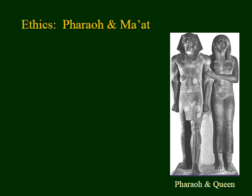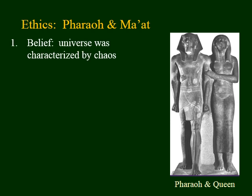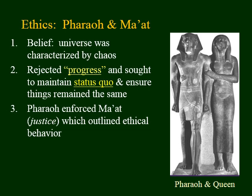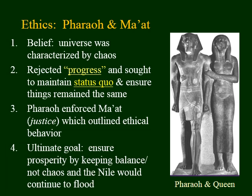A code of ethical behavior was provided by a concept called ma'at. Egyptians believed that the universe was characterized by chaos, and they wanted to ensure that this chaos did not rain down on the earth. In order to do this, they wanted to maintain the status quo — to make sure things always stayed the same. Today we have a belief in progress, but it was Pharaoh's job to maintain the status quo, ensuring the Nile flooded every year and brought nutrients to the soil. Pharaoh was responsible for maintaining ma'at or justice, ensuring that the poor would be fed, widows protected, and orphans cared for — to ensure chaos didn't reign and the Nile continued to flood, guaranteeing the people's continued prosperity.